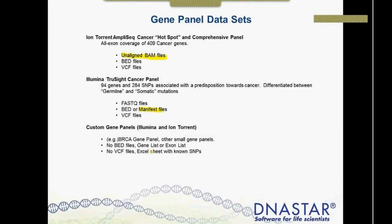For custom panels, you may not have a BED file — just a gene list or targeted regions in an Excel sheet. We can convert that file from tab-delimited Excel to BED format. Likewise, with VCF files, you might have SNPs in an Excel sheet rather than an official VCF format. We can help convert an Excel sheet with SNPs to a VCF file, and we'll have tech bulletins to help people do this on their own, or you can contact DNASTAR for assistance.